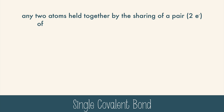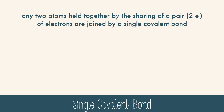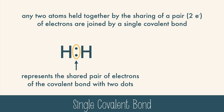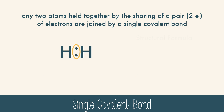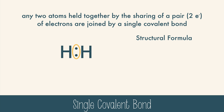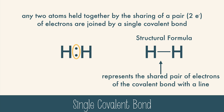Any two atoms held together by the sharing of a pair of electrons are joined by a single covalent bond. The two electrons in the middle of the hydrogen are lined up together and represent a shared pair of electrons of the covalent bond, shown with two dots. You can also draw the structural formula, which uses a line to represent the shared pair of electrons.